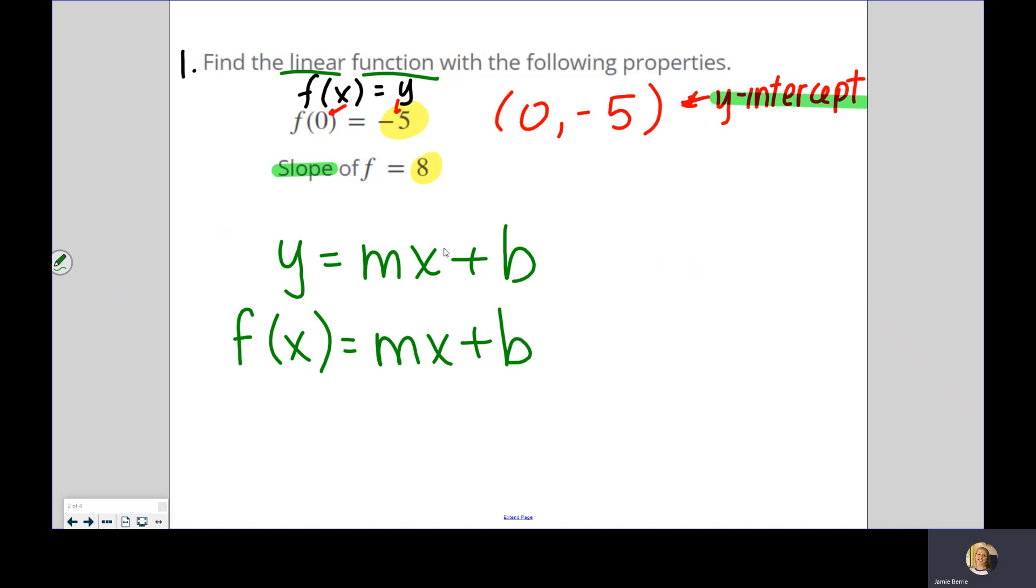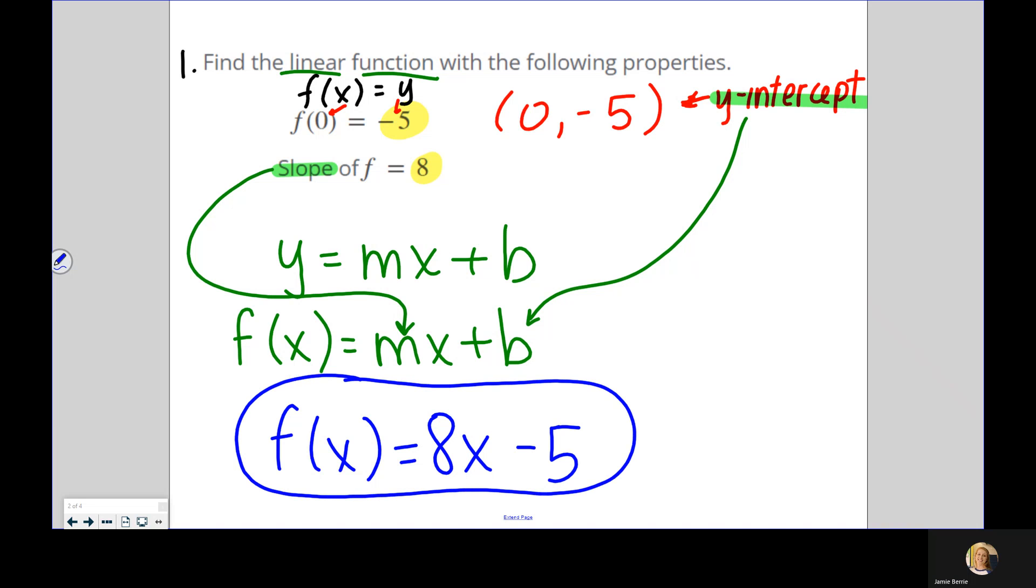So this one is super easy. It says find the linear function with the following properties. Remember yesterday, we learned that if you use this definition f(x) = y, you can match up and figure out which one is x, which one is y. So here x matches with zero, y matches with negative five. So that's the point (0, -5). Now this is a special point. Since x is zero here, this represents the y-intercept. So we can use slope-intercept form, which is y = mx + b.